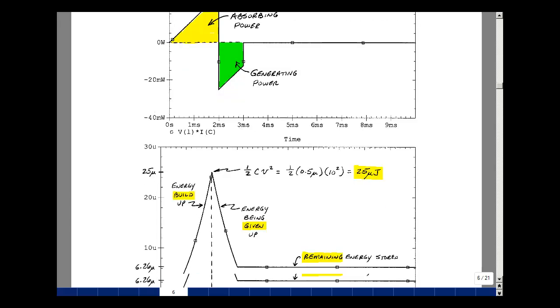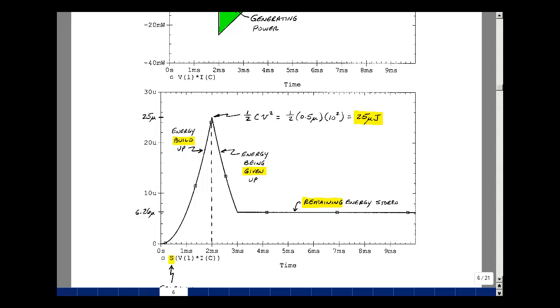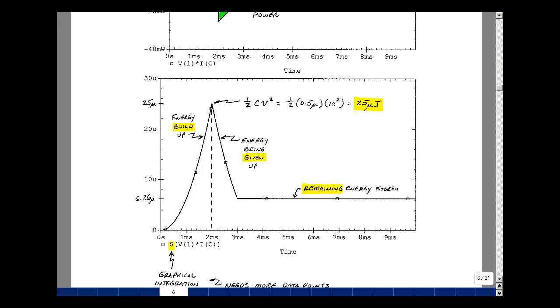In the integral of the power absorbed and probe this is just a symbol S and then of the quantity V1 times I of C. The reason I wanted more data points here is that I want to compare my hand calculations to the measured here and I was a little bit off when I only did 200 data points. So I'm going to 2,000 to make that a little bit more precise. Here's the graph of the energy absorbed by the capacitance. You can see it goes up, comes back down and levels off.